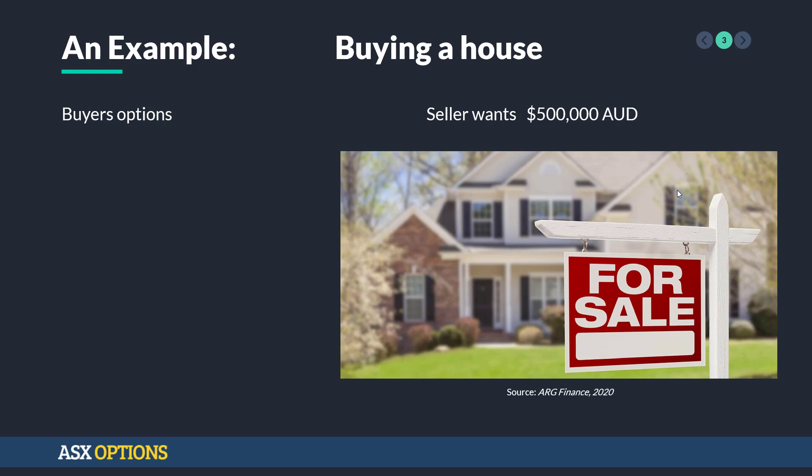The scenario is buying a house. Let's picture you've just found your dream home, and the seller would like to charge $500,000 for the transaction. You've found the perfect house, you couldn't imagine living anywhere else, great neighbourhood, etc. What are some of the ways we could go around purchasing this house? We could enter a spot transaction or a cash transaction, where we agree on the terms, the price, and we exchange money for the goods. This is a very typical transaction — it's what happens when you buy stock. You agree at a price and deliver cash in exchange for the delivery of stock from the seller.